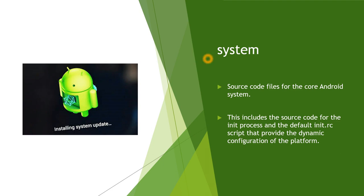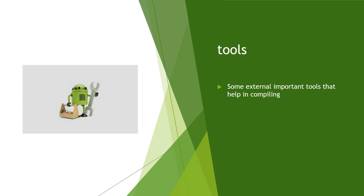System is again a very important folder. Source code files for all the core Android system are present in the System folder. This includes source code for the init process and the default init.rc script that provides dynamic configuration of the platform. As explained in the Android boot process, once init.rc is executed, the Zygote process is created. All these core parts are present in this System folder.